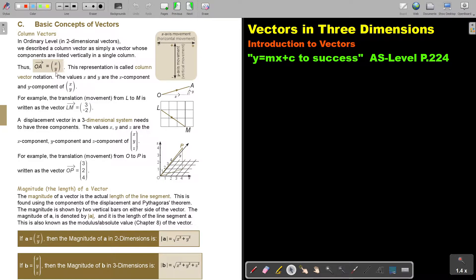Thus, say OA, then it's x, y. This representation is called column vector notation. The values x and y are the x component and y component of (x, y). Can you remember? The x-axis movement, the horizontal movement, over the y-axis movement, the vertical movement. For example, the translation movement from L to N is written as the vector.